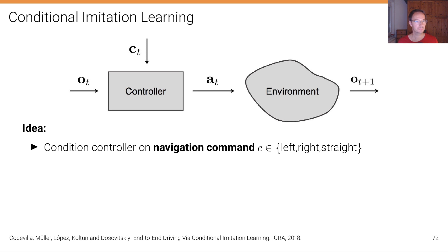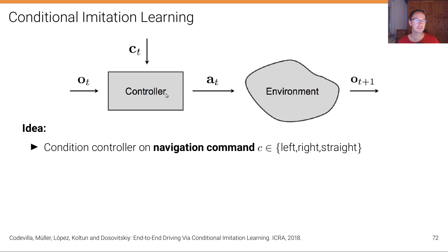Here is a schematic overview of conditional imitation learning. We have the policy, called the controller in the paper. What we do is condition this controller on both the observation — our state — and the navigational command c, which could be go left, go right, or keep straight at the next intersection. Based on these two inputs, the controller issues an action that changes the state of the environment via the state distribution, such that a new state occurs and is then fed back into the controller.